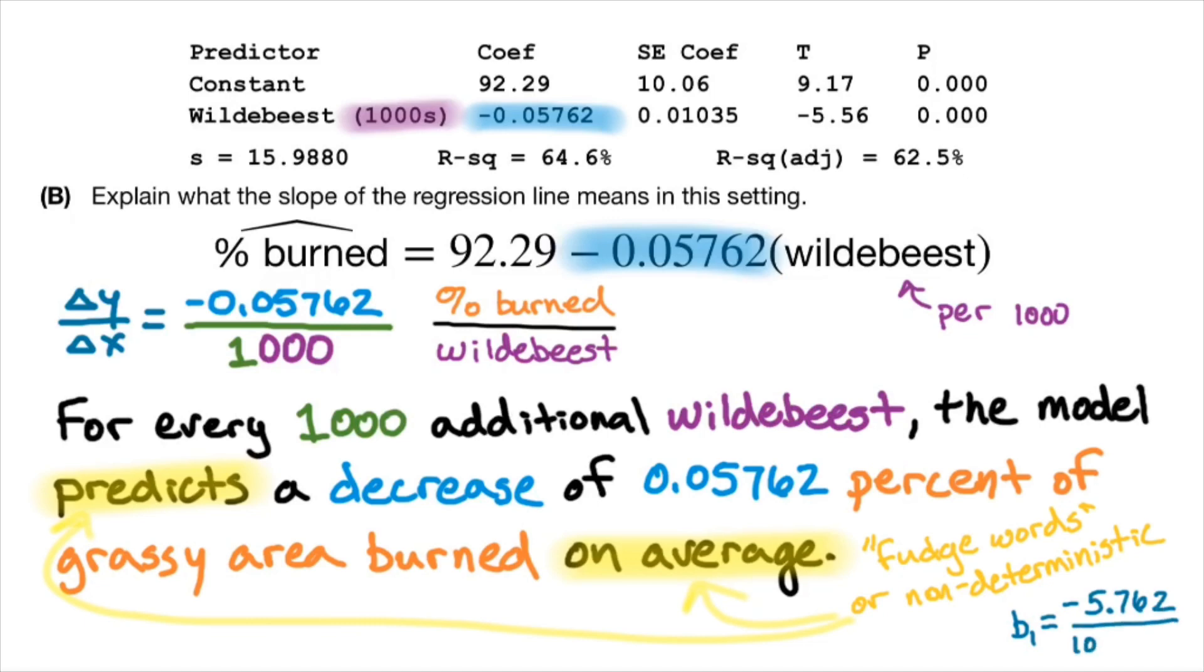In this case, if I think of the slope as being negative 5.762% for every 100,000 additional wildebeest, that makes a little bit more tangible sense. So I could write my sentence like this. For every 100,000 additional wildebeest, the model predicts a decrease of 5.762% of grassy area burned on average.